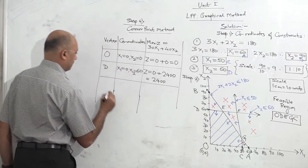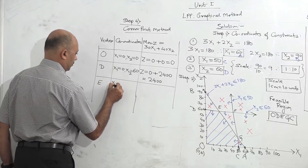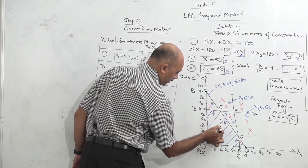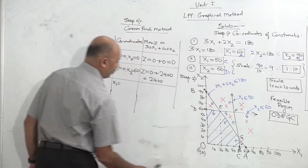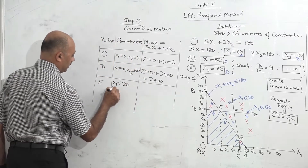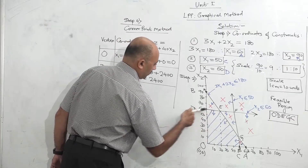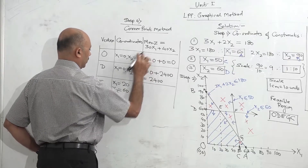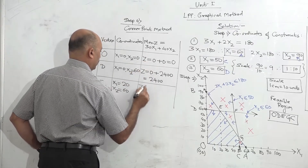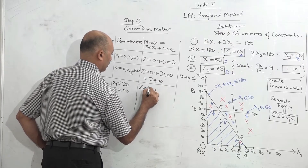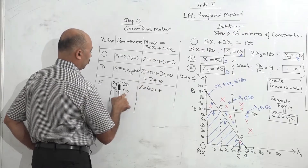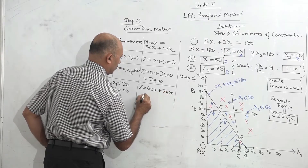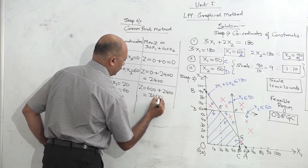From D, we go to E. At E, doing the projection on the graph, the value of x1 is 20, and E is on the line where x2 is 60. So x1 = 20, x2 = 60. Substituting in the objective function: 30 into 20 is 600, and 40 into 60 is 2400, so 600 plus 2400 equals 3000. So at point E, the value of Z is 3000.